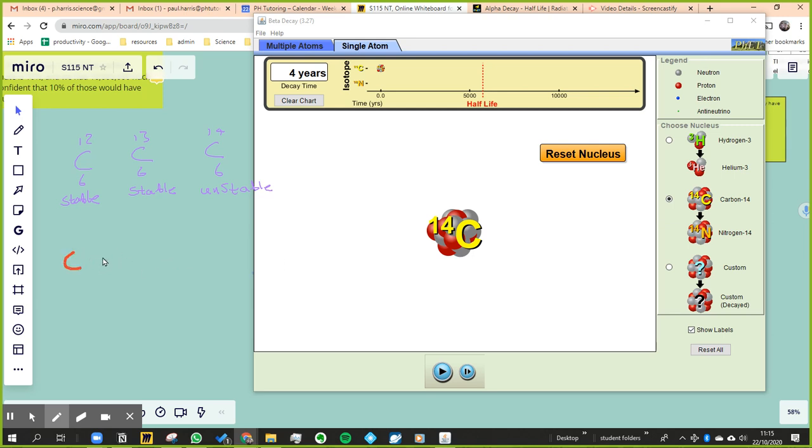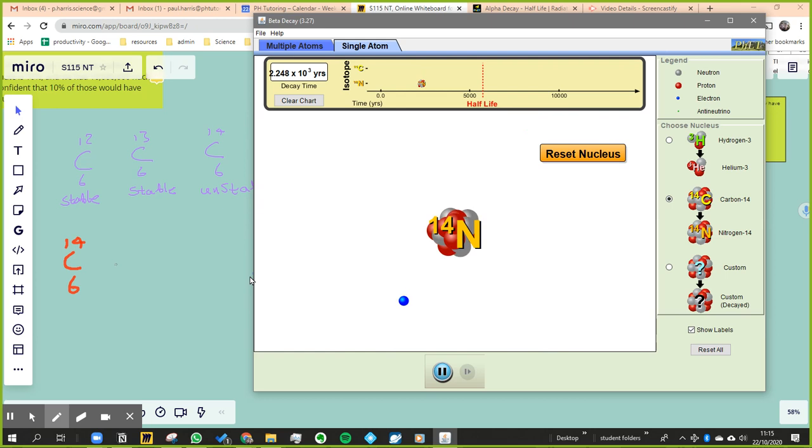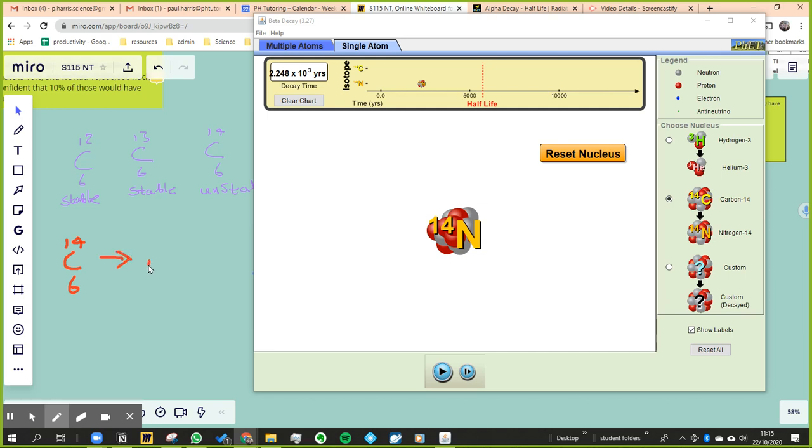You start off with carbon-14, atomic number of six. And then we're going to press play. And it changed into nitrogen-14 with atomic number seven.